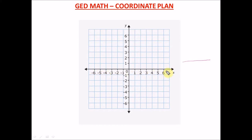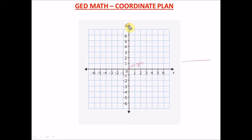Your y-axis is vertical, while your x-axis is horizontal. Similar to the number line, positive numbers are to the right and negative numbers to the left on the x-axis. For y, positive numbers go upward and negative numbers go downward. Where these two lines intersect is called the origin — the point where x and y equal zero.